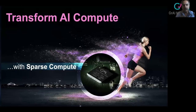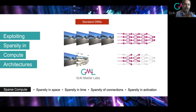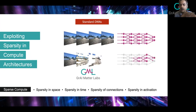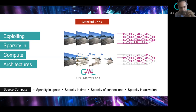So how do we change that? We transform AI compute with what we define as sparse compute. The idea is to process only the changes that come in. The difference between the first frame and the next frame results in computations defined only by what has changed. This happens not only at the input but also at the processing side. We leverage sparsity in the input by processing only what has changed. This sparse compute takes advantage of sparsity in space, in time, in the connections, and in activation.